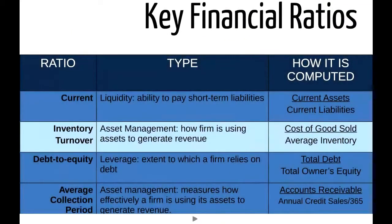First off, we have the current ratio — a type of liquidity ratio dealing with a company's ability to repay its short-term liabilities. The way you utilize it is to take your current assets and divide them by your current liabilities. Current assets include cash, accounts receivable, and inventory. This tells you whether the company has enough of those items on hand to cover liabilities due in a year or less. Typically, although it depends on the industry, you want to see a current ratio anywhere from two to three, meaning you have twice or three times as many assets as liabilities, making it more likely you'd be able to repay them.